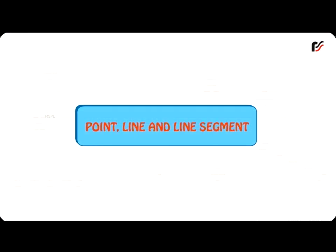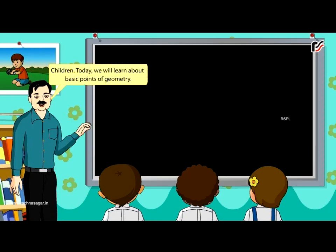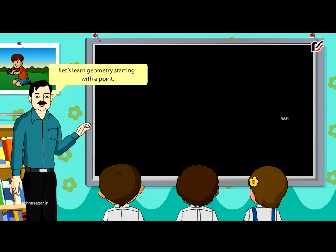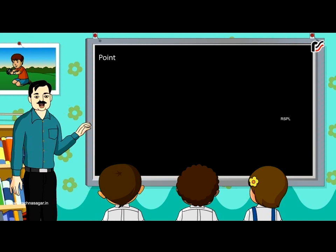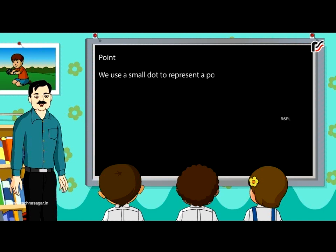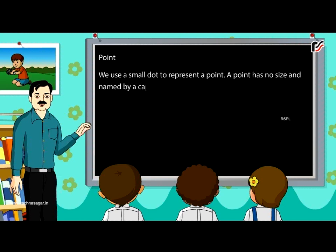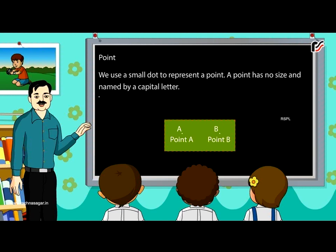Point, line and line segment. Children, today we will learn about basic concepts of geometry. Let's learn geometry starting with a point. We use a small dot to represent a point. A point has no size and is named by a capital letter. The points shown here are point A and point B.